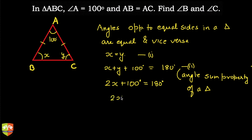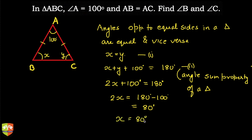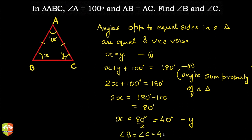So, it is 2X plus 100 degrees will be equal to 180 degrees. Very simple. So, 2X will be equal to 180 minus 100, which is 80 degrees. Hence, X will be simply 80 degrees divided by 2, which gives 40 degrees. So, we have found that X and Y are both equal to 40 degrees. Hence, angle B is equal to angle C is equal to 40 degrees.